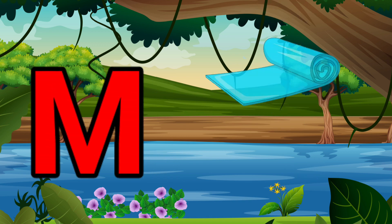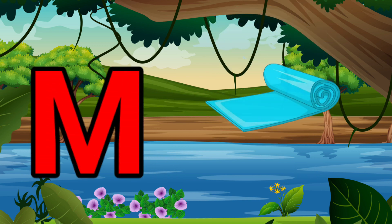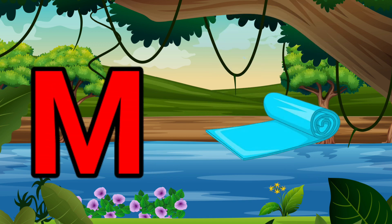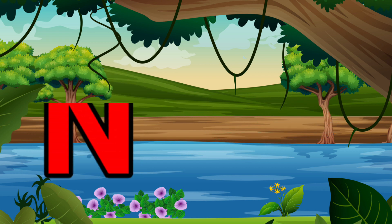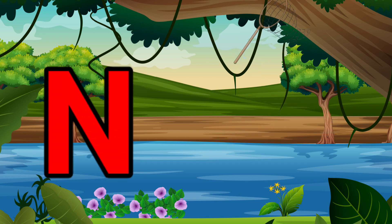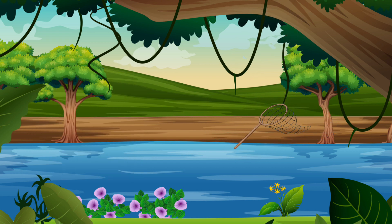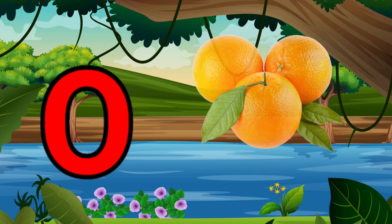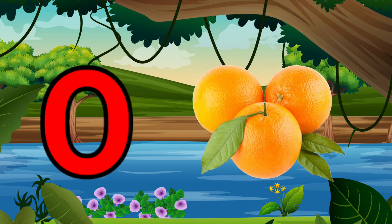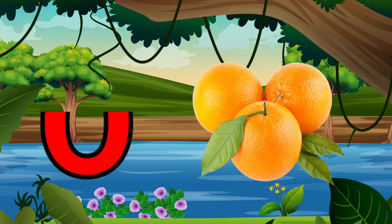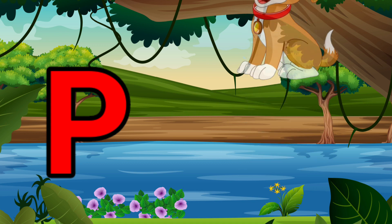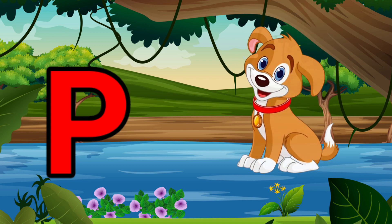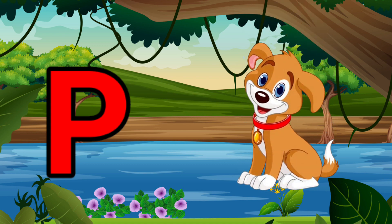M is for Mat, M-M-Mat. N is for Net, N-N-Net. O is for Orange, O-O-Orange. P is for Pet, P-P-Pet.